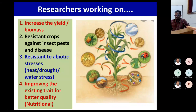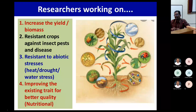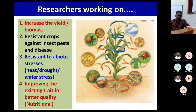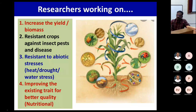The first mandate is increasing yield or biomass — because demand keeps increasing due to growing population, and most crop research institutes target this. The second is developing resistant crops against insect pests, since 30 to 40% of losses are due to insects and pest disease. The third is abiotic stress — mainly heat, drought, and water stress, which are major causes of yield reduction. The fourth is improving existing traits or better nutritional quality. All crop research institutes are currently working on these mandates.